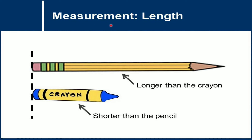So for measurement we have length. Remember, when you're trying to measure two objects, make sure they are both having the same starting point, so that we can determine the exact length of the object. In this case we have a pencil and a crayon. The pencil is longer than the crayon, or you can also say the crayon is shorter than the pencil.